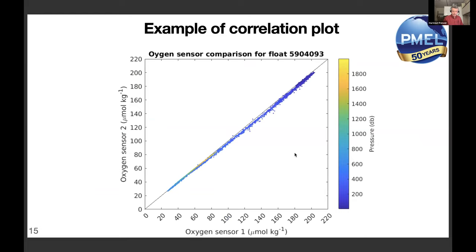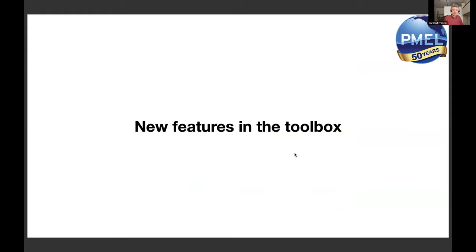All these standard plots can be made with just one line of MATLAB. The GitHub repository includes demo scripts showing how to make other plots, such as a correlation plot for a float with two different oxygen sensors. You can compare any combination of variables with a few lines of code.